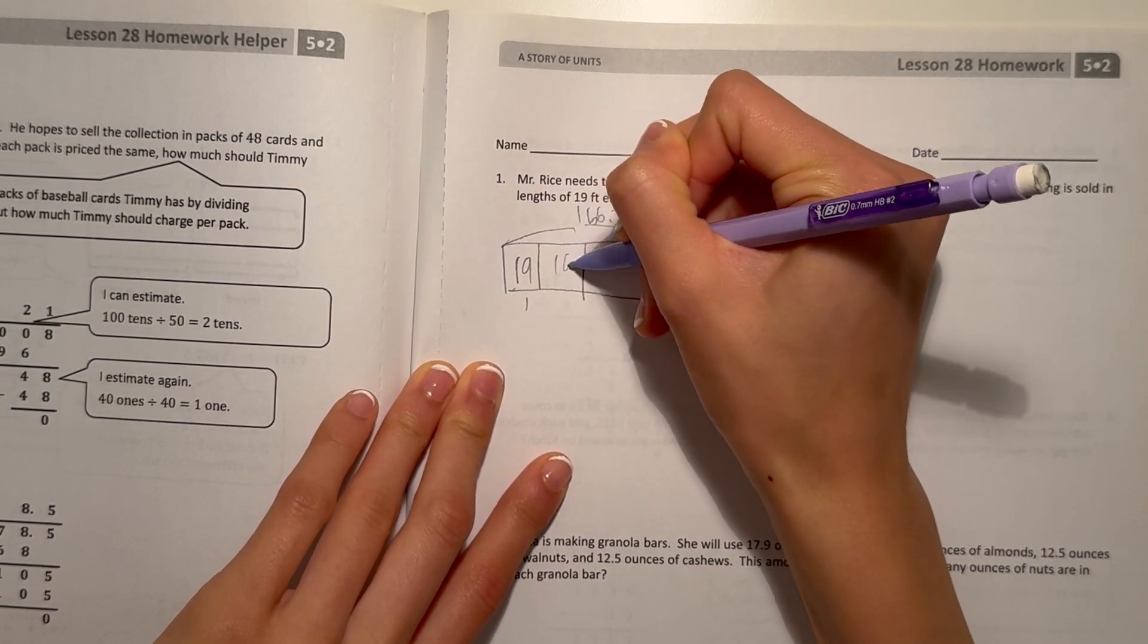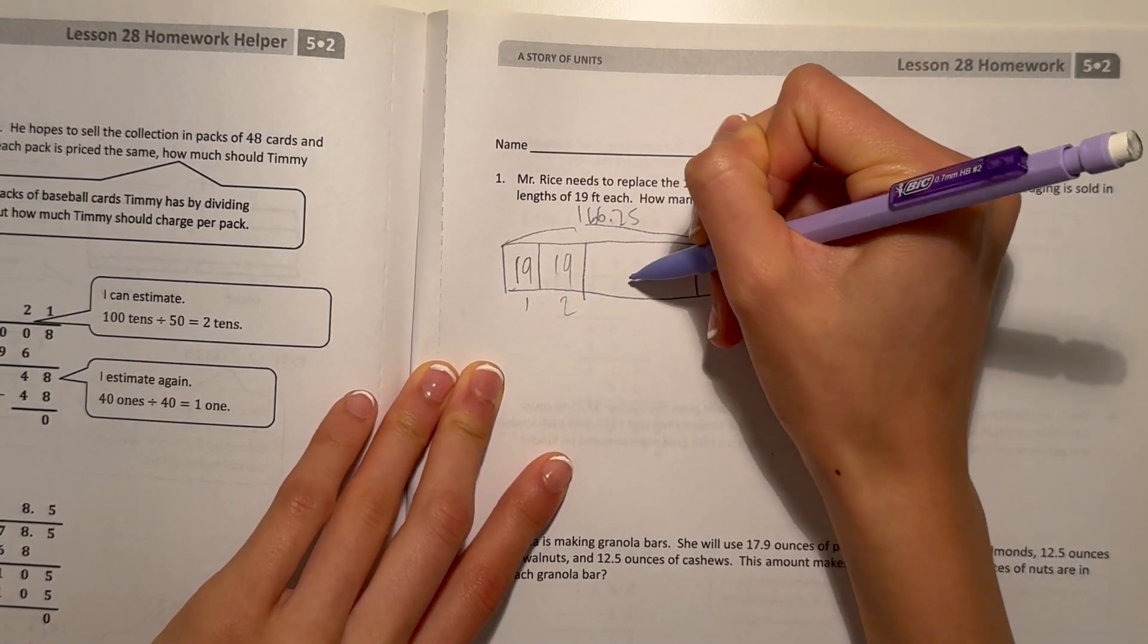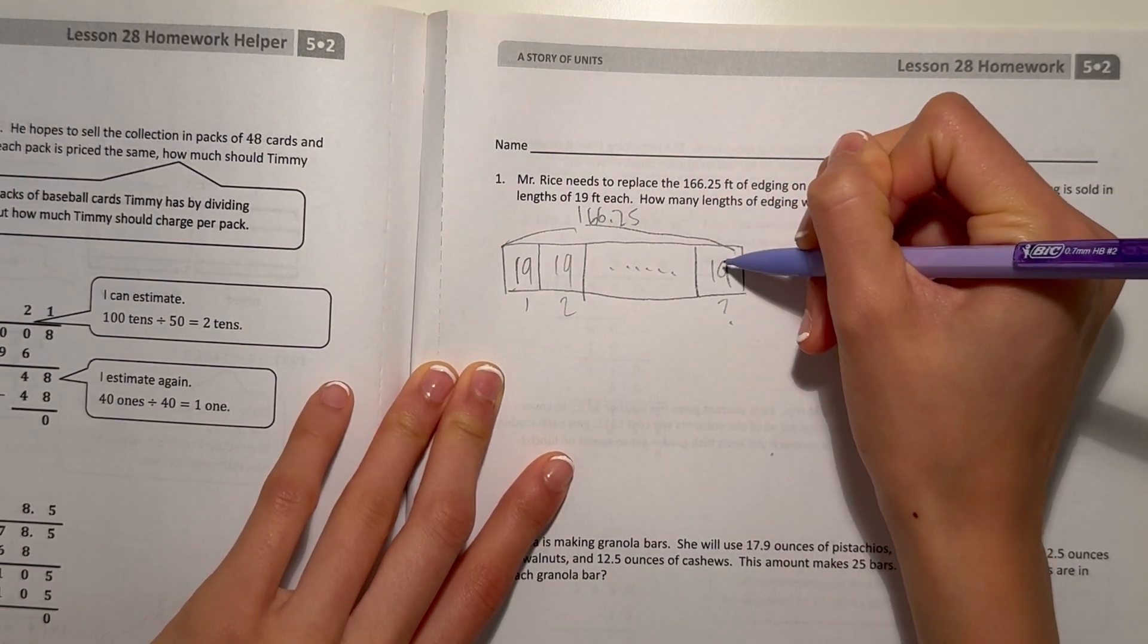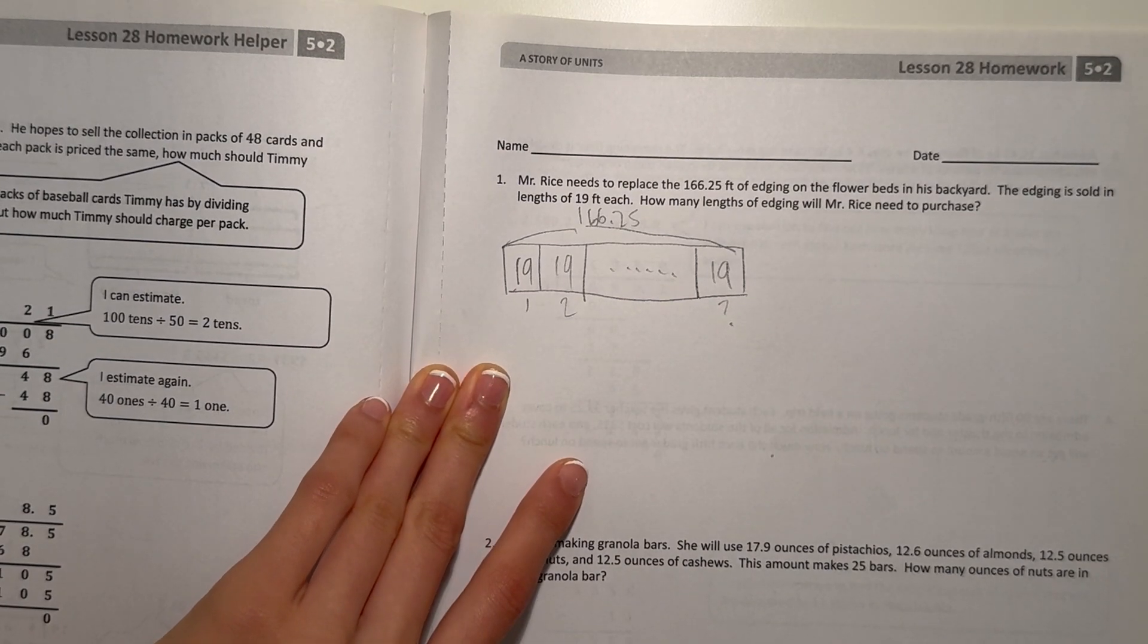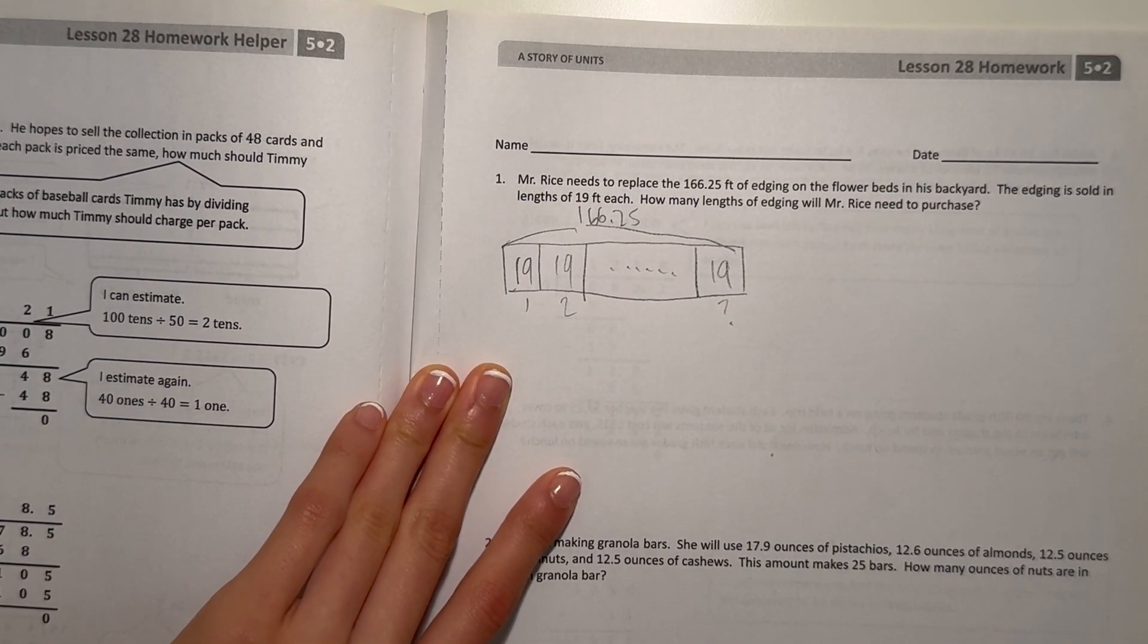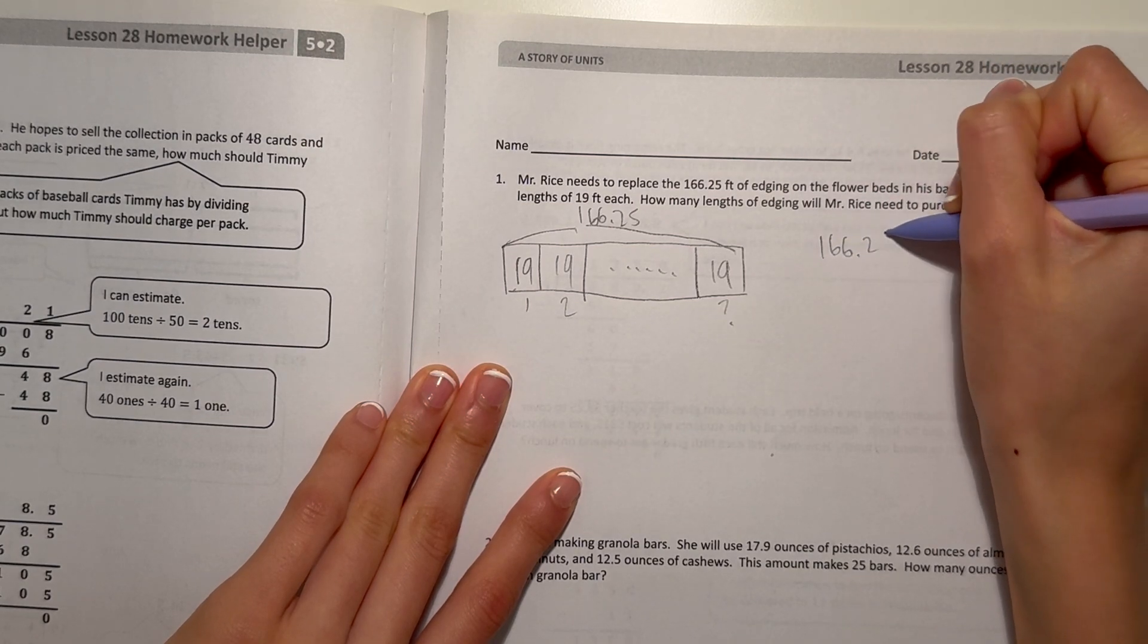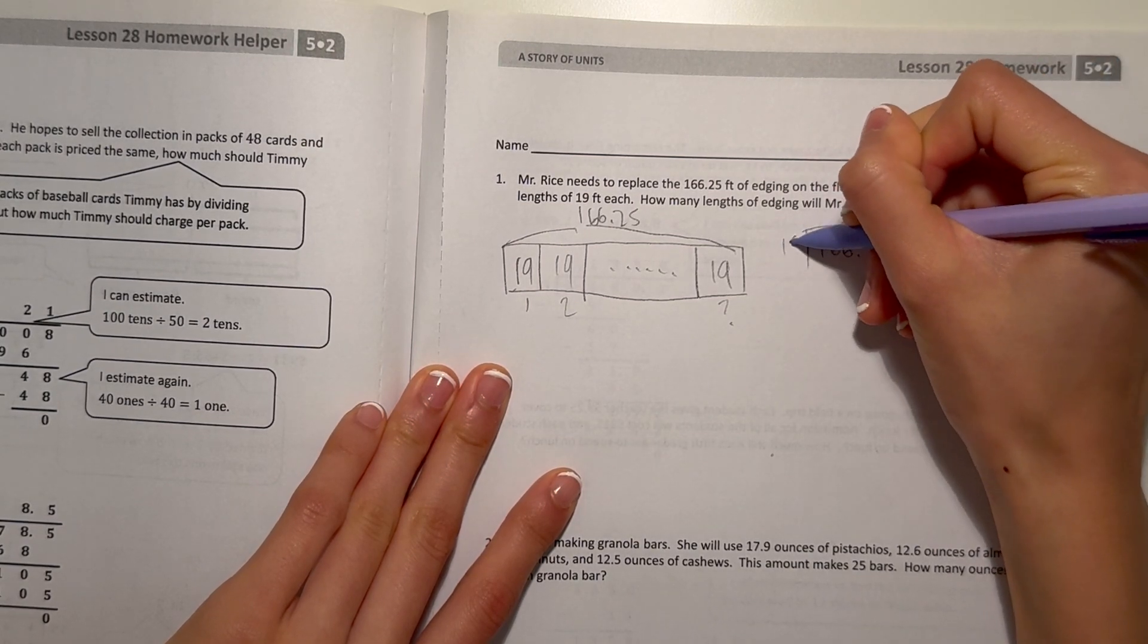Alright, so let's draw a tape diagram. We know he has a total of 166.25 feet that he needs to replace, and each edging is sold in 19 feet each. So to solve this, we can do 166.25 divided by 19.